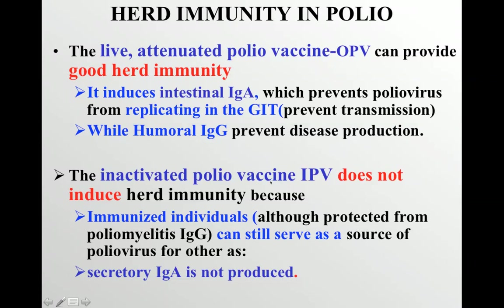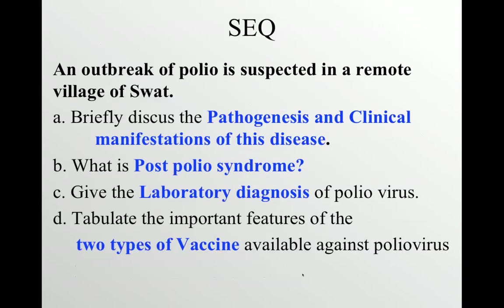Inactivated polio vaccine is injected and produces IgG, but it does not prevent transmission of the virus because secretory IgA is not produced. This is the key concept of herd immunity you will be asked about in exams — in your table viva and you can also get an SEQ on herd immunity.